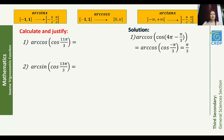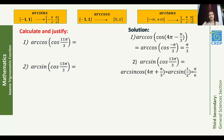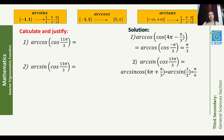Part 2 — arc sine(cos(13π/3)). Here we have arc sine of a cosine, not arc sine of a sine, so we must compute cos(13π/3) first. We write 13π/3 = 4π + π/3, and cos(4π + π/3) = cos(π/3) = 1/2. Therefore arc sine(cos(13π/3)) = arc sine(1/2) = π/6, since sin(π/6) = 1/2.